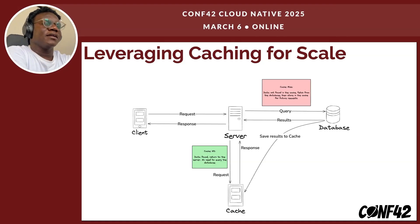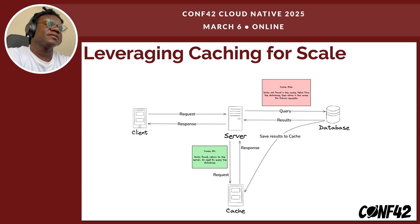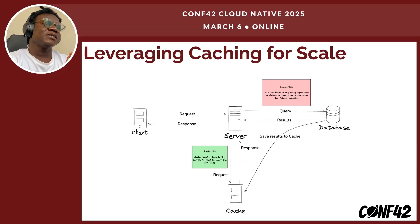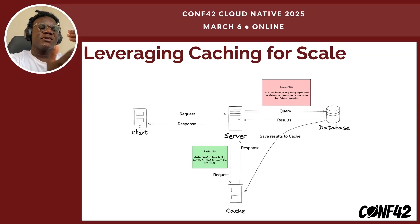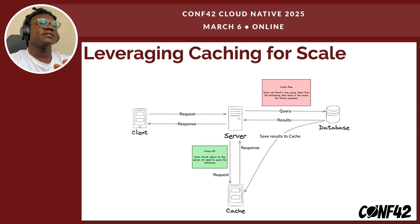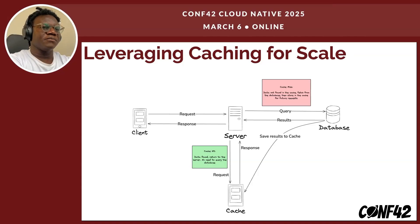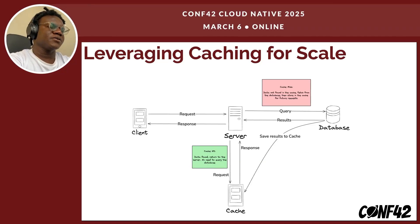This is where we can leverage a cache to scale this solution. Instead of the server reaching out to the database each time for frequently accessed data, the server can reach out to the cache and ask: is this record in the cache? If the record is available, the server returns it from the cache. If not, the server fetches it from the database, writes it back to the cache, then returns it to the client so that future requests can be retrieved from the cache.